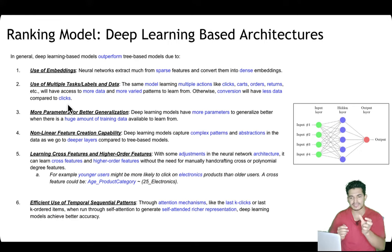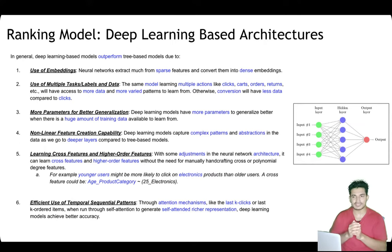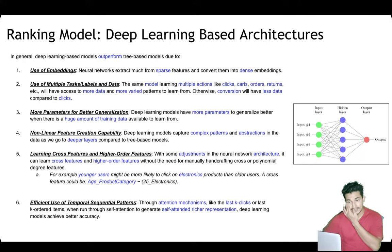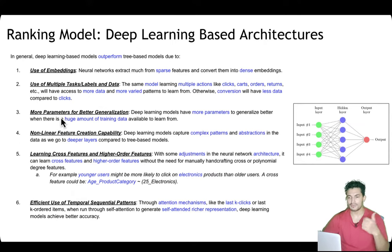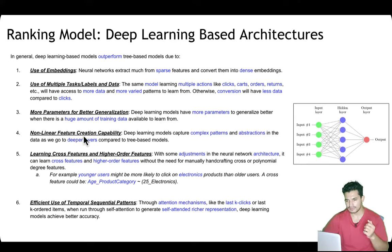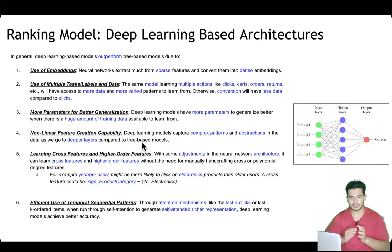For sparse objectives like conversion, a tree-based model has limited data. But in a deep learning multitask model trained for click, cart, order, return, and conversion, even sparse objectives benefit from access to more varied data. Deep learning models also have more parameters for better generalization and capture complex nonlinear patterns and abstraction in the data as we go to deeper layers, which tree-based models cannot match as data grows.